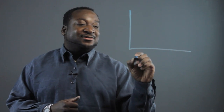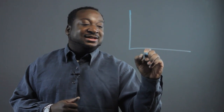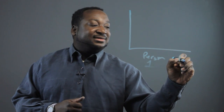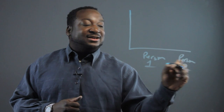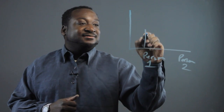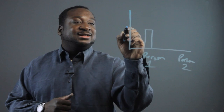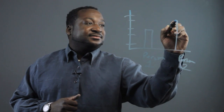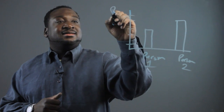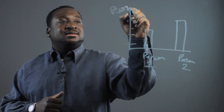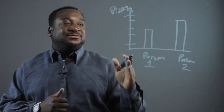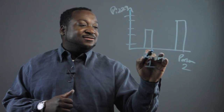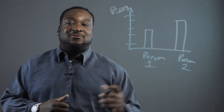Let's say that we have, for example, this bar graph here. You have person one and person two on it. This vertical axis will have units of pizza, and on the horizontal axis, person one and person two.